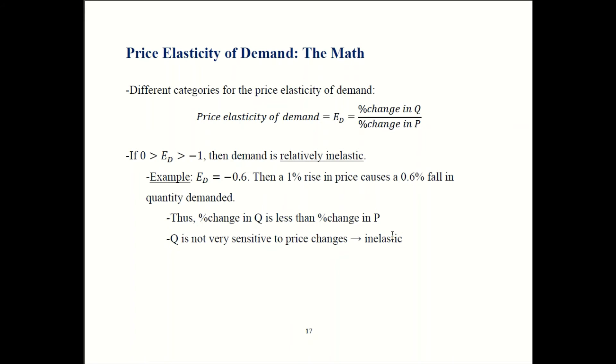Another possibility is that the elasticity could be less than zero, but greater than negative one. That gives you demand that we call relatively inelastic. So let's say you had an elasticity of minus 0.6. What that means in plain English is that if prices go up by one percent, then people buy 0.6 percent less. So the change in quantity is less than change in price. You don't get a one for one response, you get a less than one for one response. So it is responding, but just not by very much. It's not very sensitive to price. If demand is kind of insensitive to price, we call that inelastic.